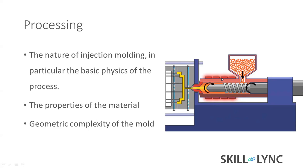Coming to material, we need to know the physical property of the material - no need to know the chemical property. We need to understand the physical properties like viscosity, also called melt flow rate - how the material flows. We need to understand the rheological behavior: how the material behaves while shearing, whether it reacts to shear or not, because some materials are shear sensitive.